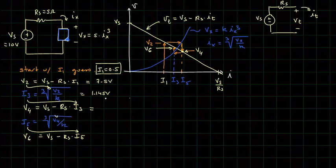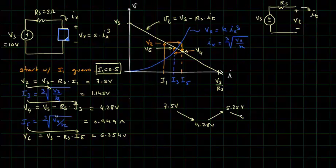So V4 then would be 4.28 volts. I5 would be equal to 0.949 amps. V6 is 5.254. And we see this progression from 7.5 volts to 4.28 volts to 5.25 volts to 4.92 volts to 5.03 volts to 4.99 volts.